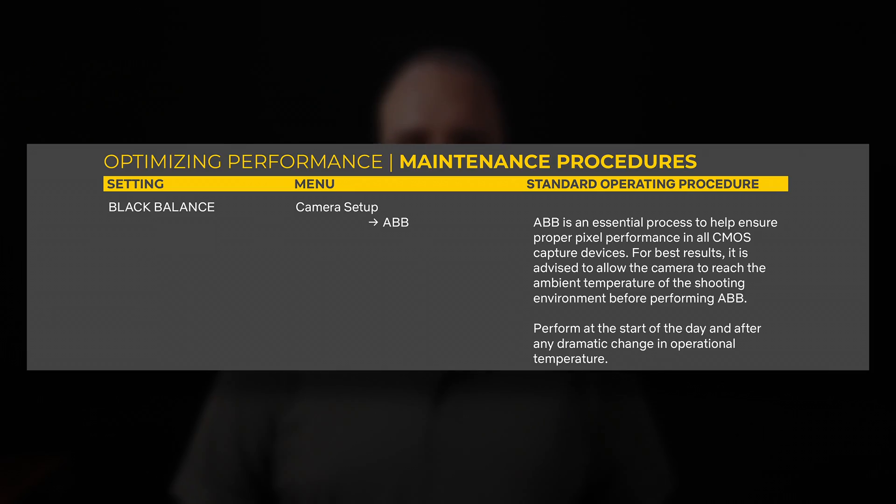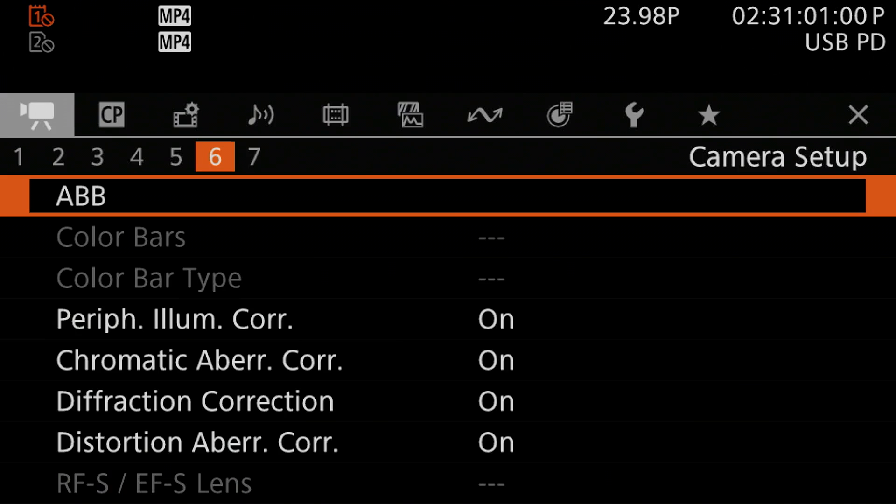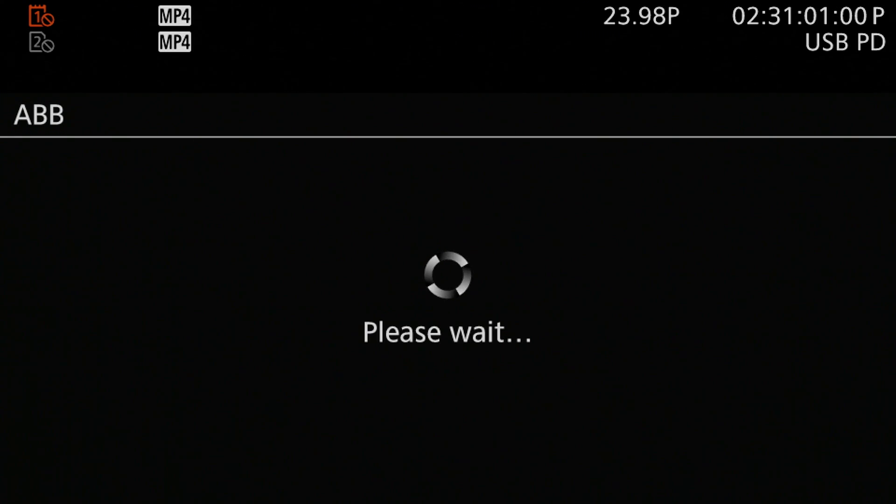The final thing that Netflix calls out is auto black balance, or ABB as it is noted in the camera. Oddly, auto black balance is not actually automatic — it's a manual process that you have to trigger to recalibrate the camera's black balance. Netflix recommends running this process at the start of every day or any time there is a dramatic change in the camera's temperature. The auto black balance process itself is pretty simple and only takes a few moments. You'll find the setting to trigger this at the top of the Camera Setup 6 menu page, labeled ABB.